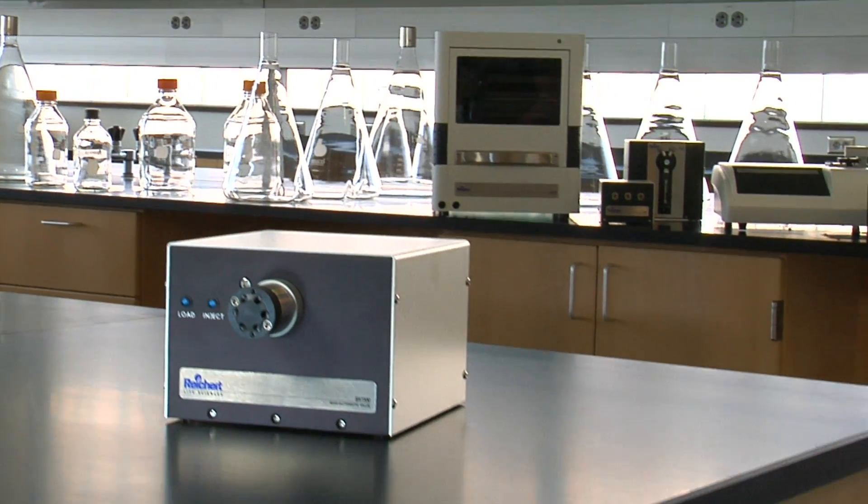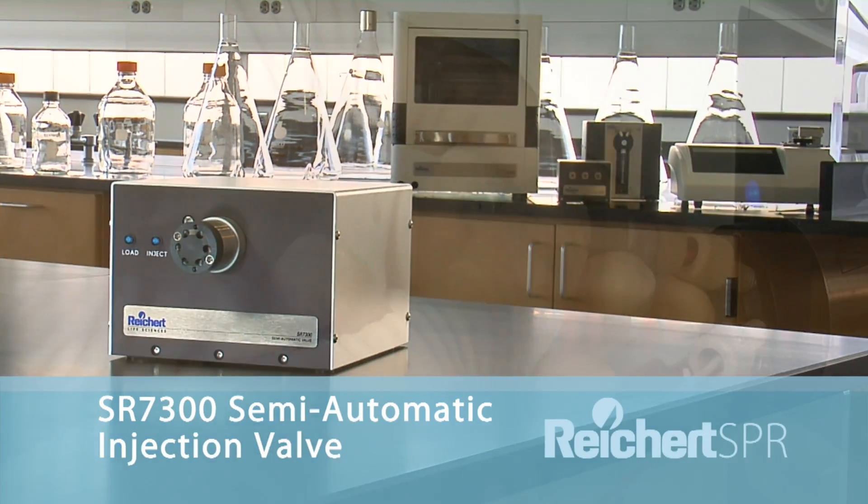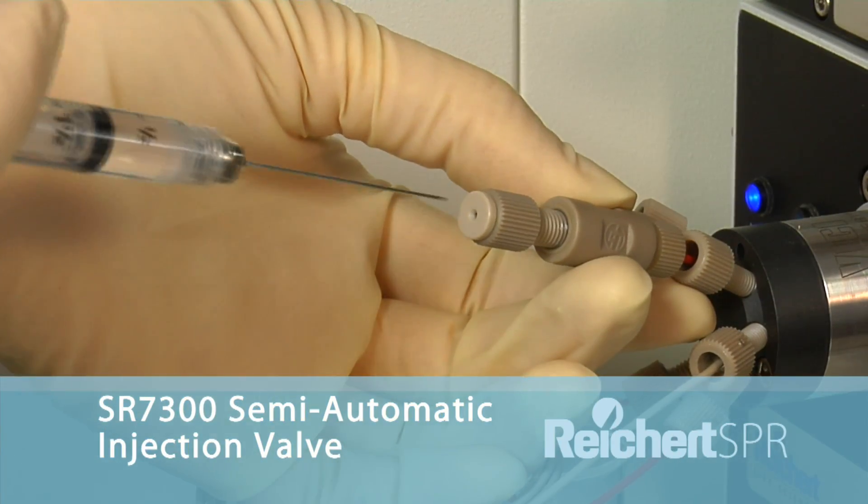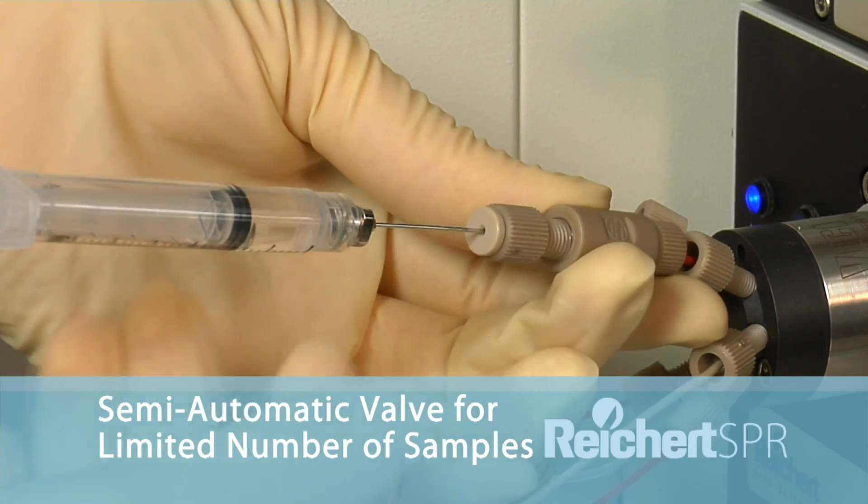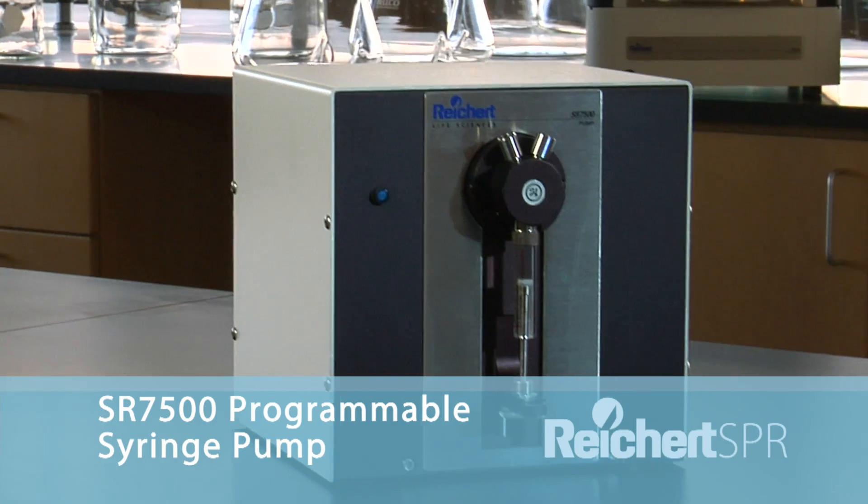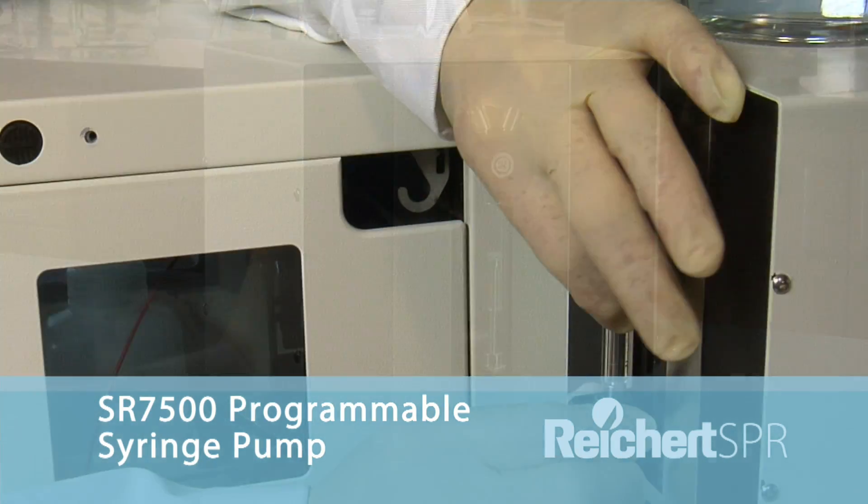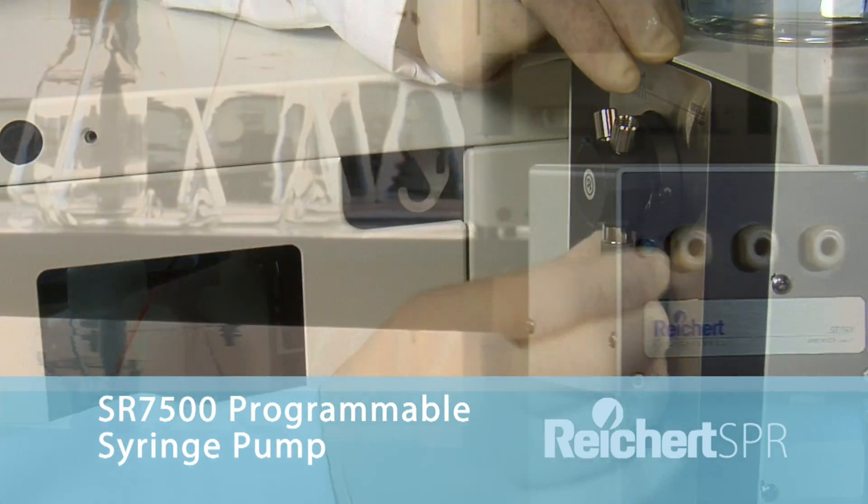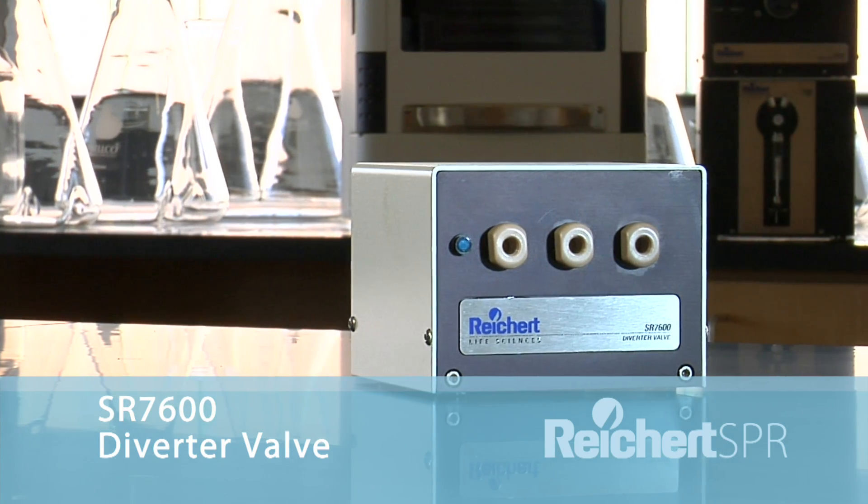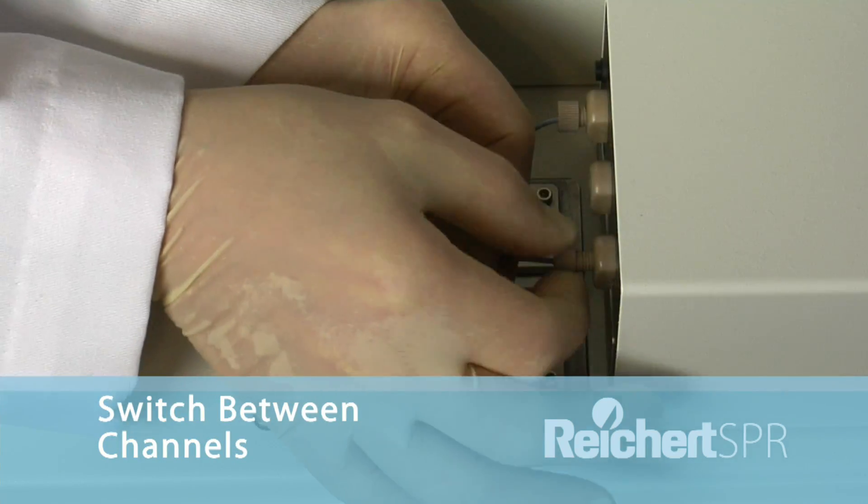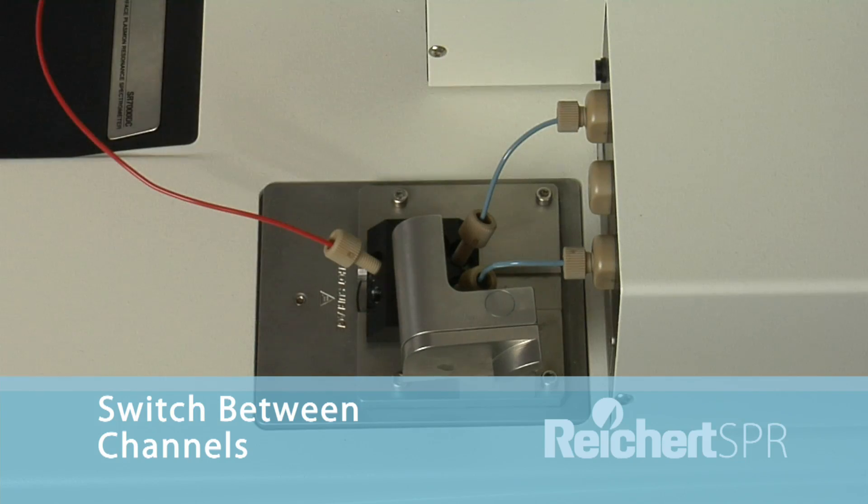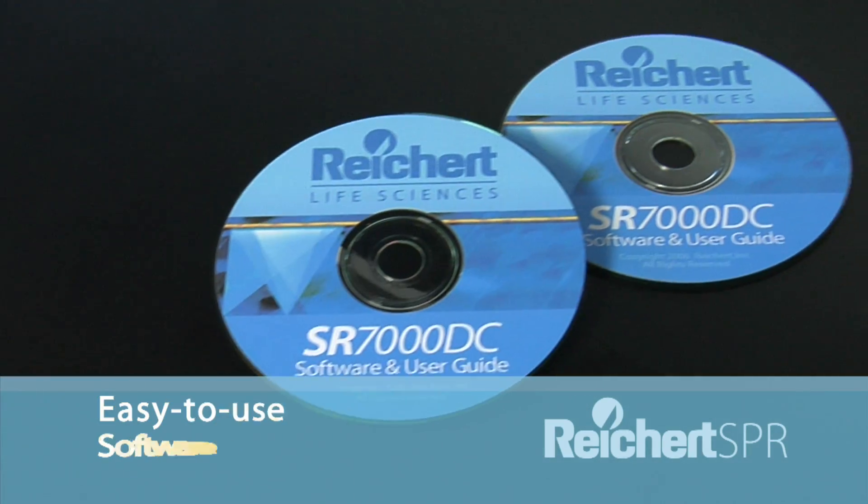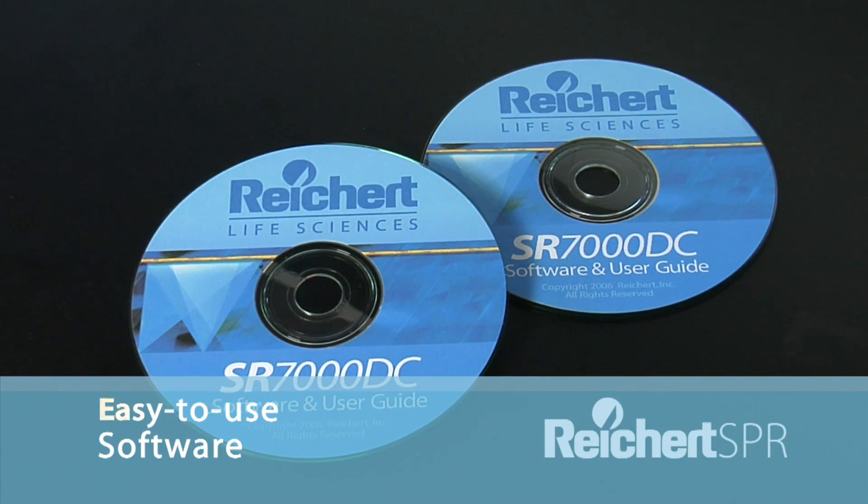Other system components include the Reichert semi-automatic injection valve, an attractive alternative to the auto sampler for testing a limited number of samples. The programmable syringe pump that delivers a wide range of high precision flow rates. The diverter valve, which allows for automated flow switching between channels, allowing automated immobilization of a ligand onto only one channel, and easy-to-use data analysis software.